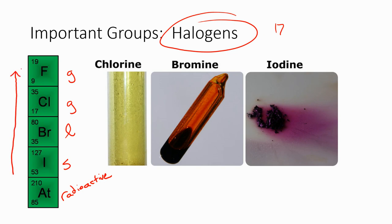To put that in perspective, HCl — hydrochloric acid — is something we used in the lab. It contains chlorine, and while we need to be very cautious with it, it's nowhere near the reactivity of the element just above it. That compound — hydrofluoric acid — is something we would never use in a high school laboratory because of how dangerous it is. It's very reactive and can be very dangerous to tissue.